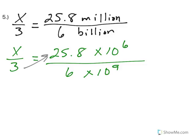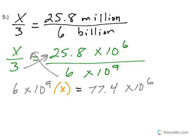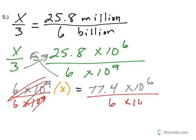So now when I cross multiply, I end up with 6 times 10 to the 9th times my x value equals, when I take 3 times 25.8, I get 77.4 times 10 to the 6th. Now I'm going to divide by the 6 times 10 to the 9th, and that makes these go away.